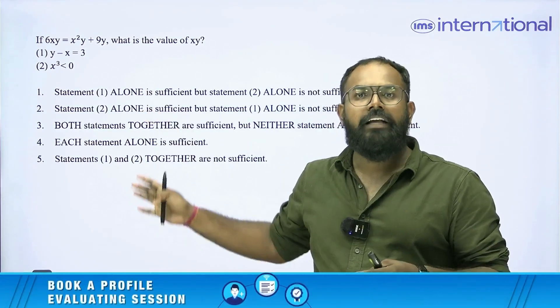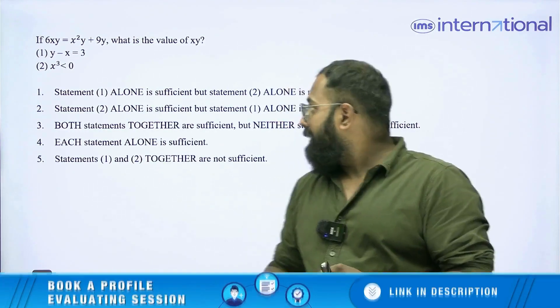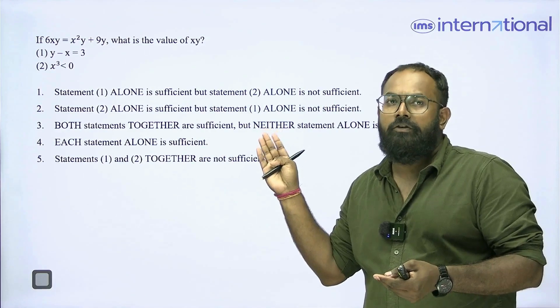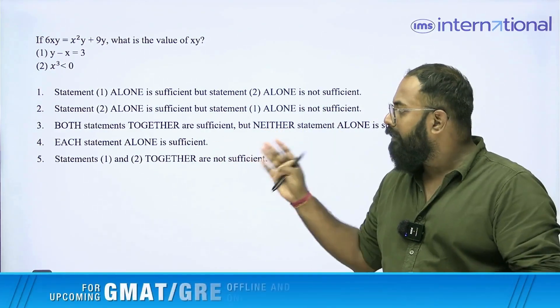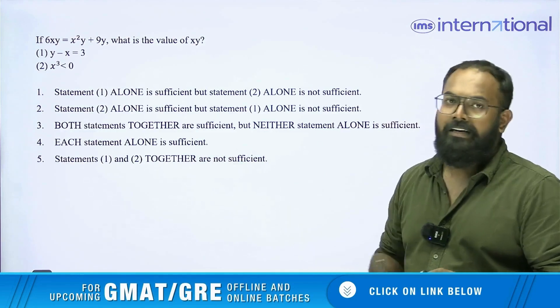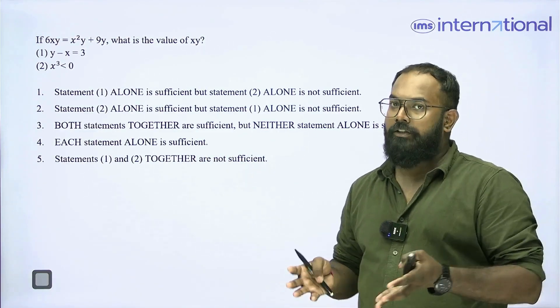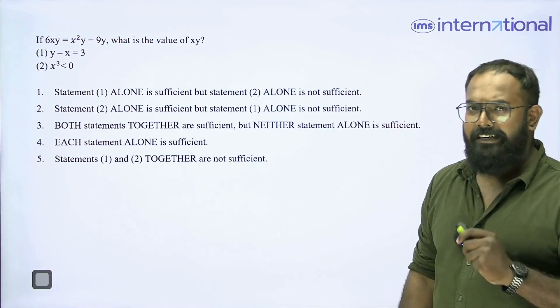These are the standard five options that you will see in all the questions of this type which states statement 1 alone is sufficient but not statement 2, statement 2 alone is sufficient but not statement 1, both together are sufficient but neither alone, each alone is sufficient and statement 1 and 2 together are not sufficient. You will see these five options in all their data sufficiency question of this type. Clear? Now let us straight away go to the question.